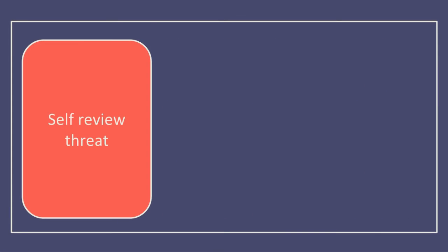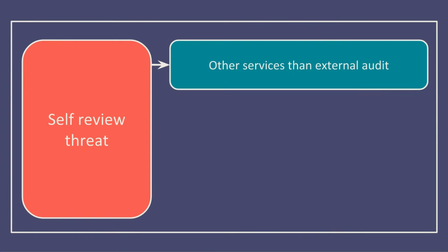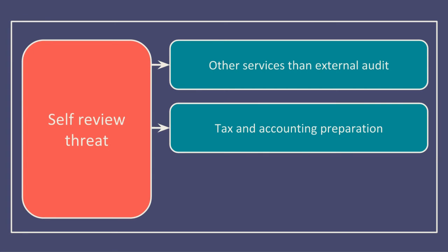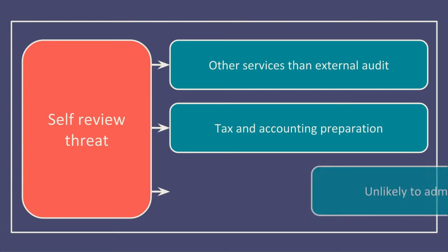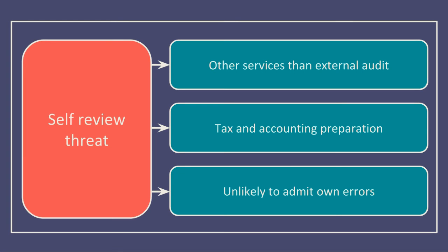A self-review threat arises where an audit firm may provide other services other than external audits to a client. Other services such as tax and accounting preparation could be completed by an individual who then goes on to work on the audit assignment. The issue is that if they were to audit their own work and discover an error, it would be unlikely that they would admit to it, thereby leaving a potential material misstatement in the financial statements.